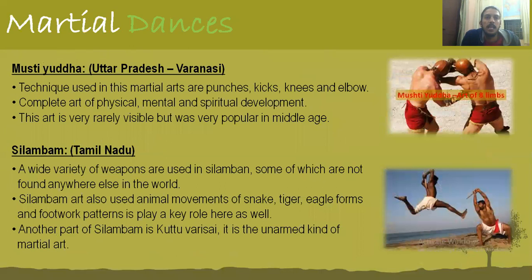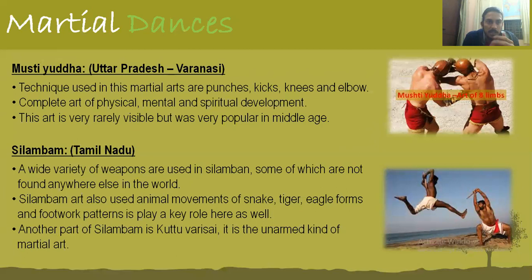Then you have Mushtiyuddha — called the art of eight limbs. It is very popular in Varanasi, UP. This sport has been popular since Krishna's times, though the name has changed and the sport has evolved. It is rarely visible now but was very popular in the middle ages. There are zero weapons — not even a stick. It is completely hands-based.